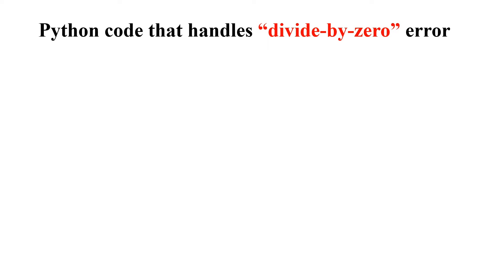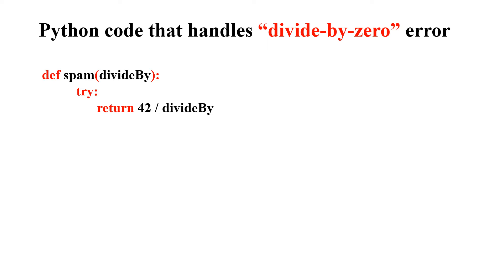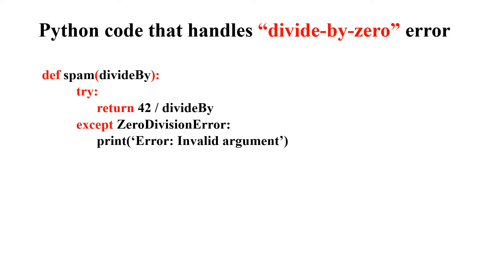This is the Python code that handles the divide-by-zero error. The function `spam` with parameter `divide_by` now uses a `try` block containing `return 42 / divide_by` — the statement that may cause the error. Then `except ZeroDivisionError:` catches the error and prints 'Error: Invalid argument'. If the error occurs, execution goes to the `except` clause, prints the message, and the program does not stop — it continues thereafter. This is the advantage of exception handling.